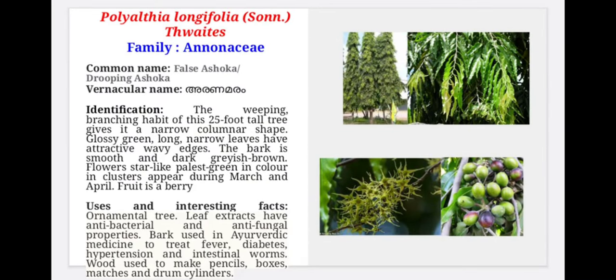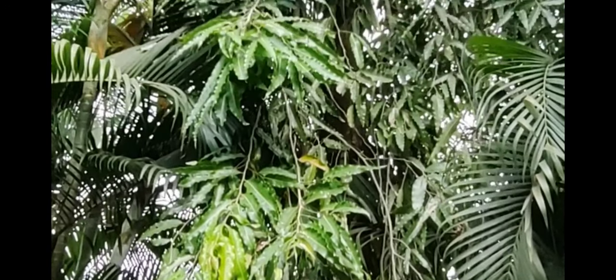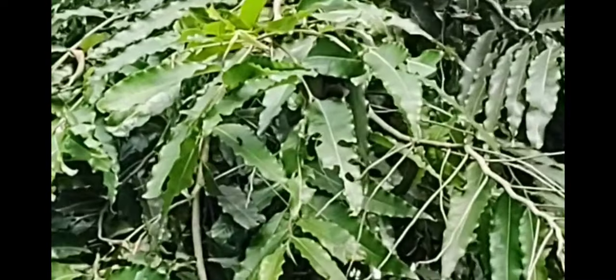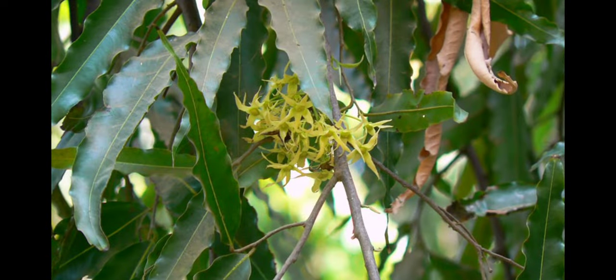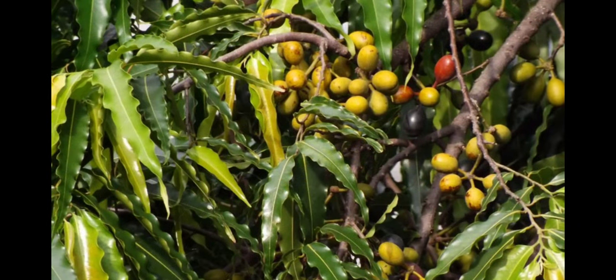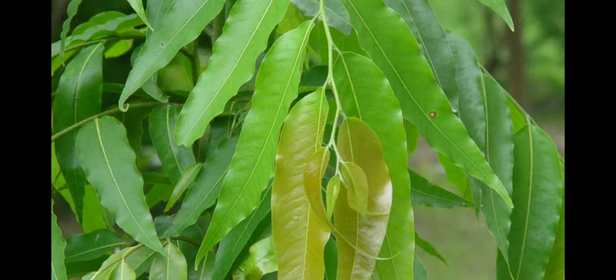Polyalthia longifolia, family Annonaceae. Commonly called false ashoka or drooping ashoka and its Malayalam name is Aranamara. The weeping branching habit gives it a narrow columnar shape. It has glossy green, long narrow leaves with attractive wavy edges. Flowers are star-like, palest green in color, appearing in clusters during March and April. Fruit is a berry. These are ornamental trees and leaf extracts have antibacterial and antifungal properties. Wood is used to make pencils, boxes, matches and drum cylinders.